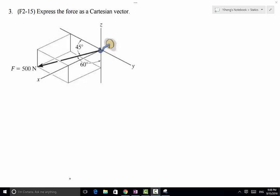In this problem we have a force vector. We know its magnitude is 500 newtons. We know something about its direction. We know that this angle right here, which is made by this force with